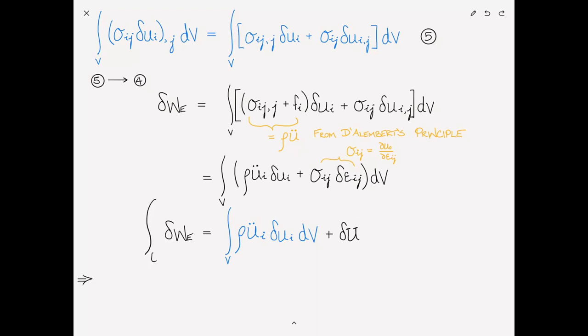So, now what I'm going to do is I'm going to integrate both sides of these equations from T1 to T2. And what I get is the integral from T1 to T2 of del W e, and I'm going to bring that to the other side. So, del W sub e minus del U dt, and that's equal to, again, the integral from T1 to T2 of everything in blue, the integral over the volume of rho Ui double dot, del Ui dv, times dt. Let's give these some numbers, 6, 7, and 8.